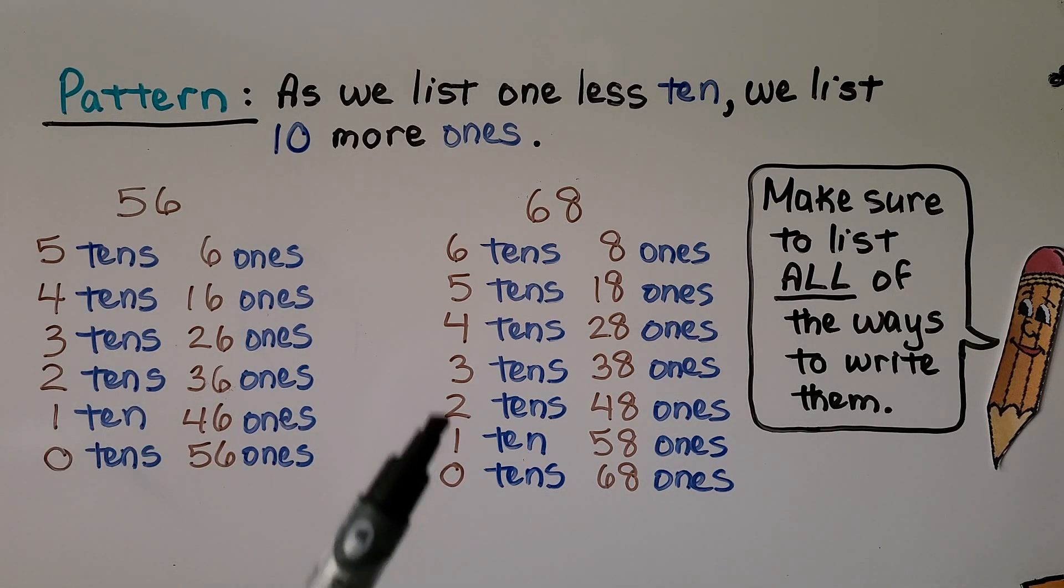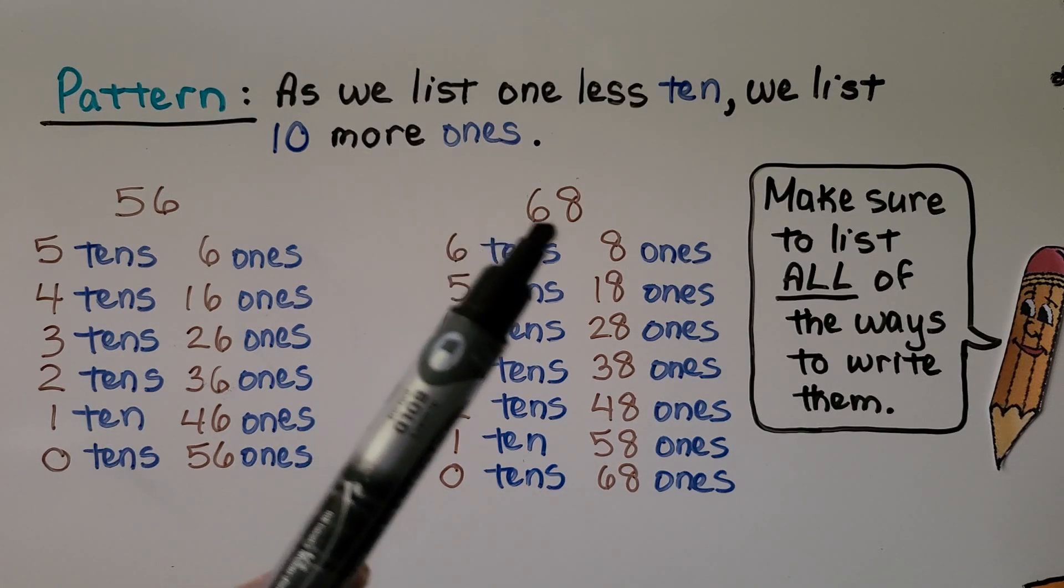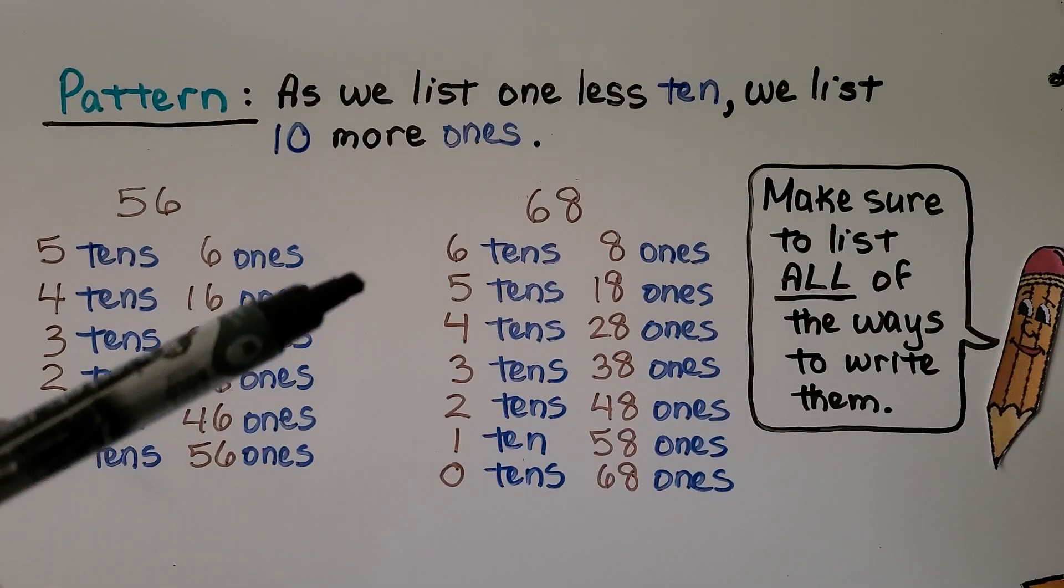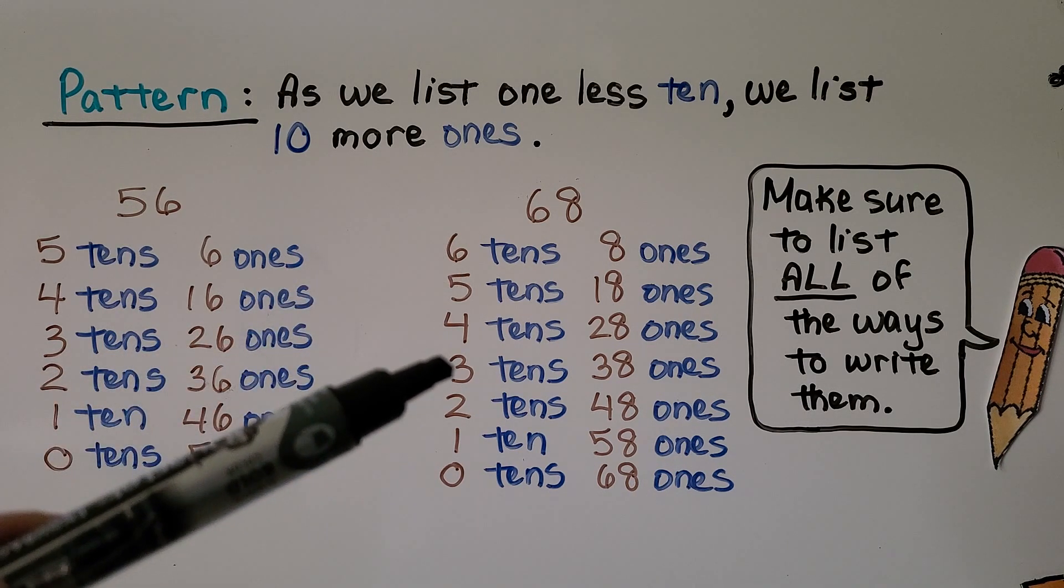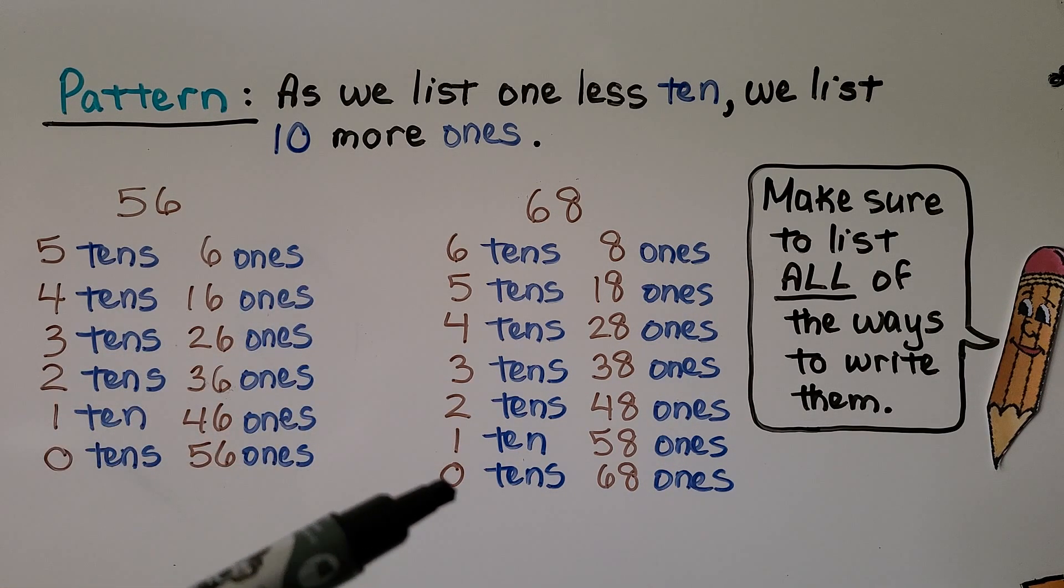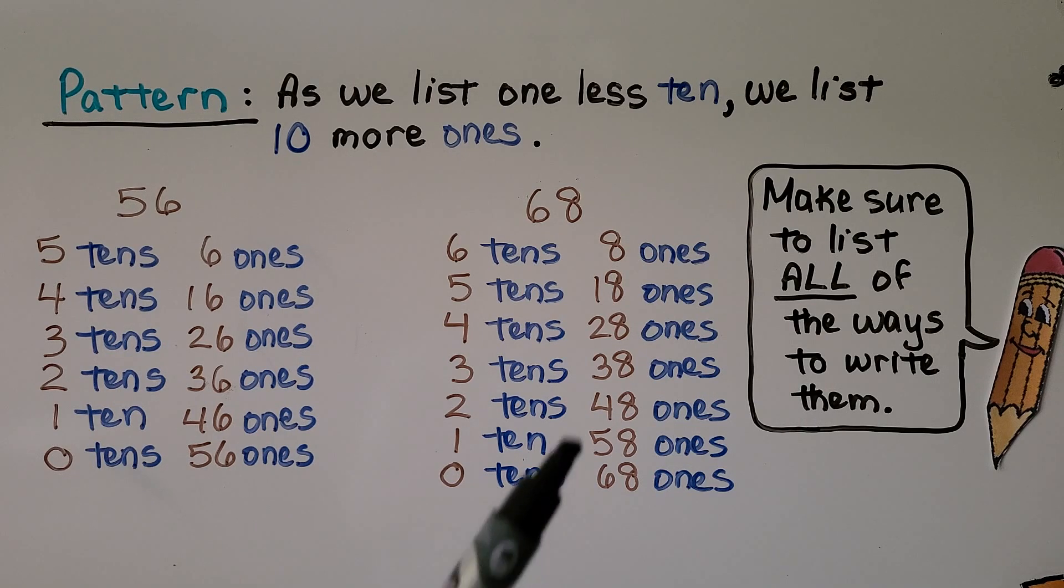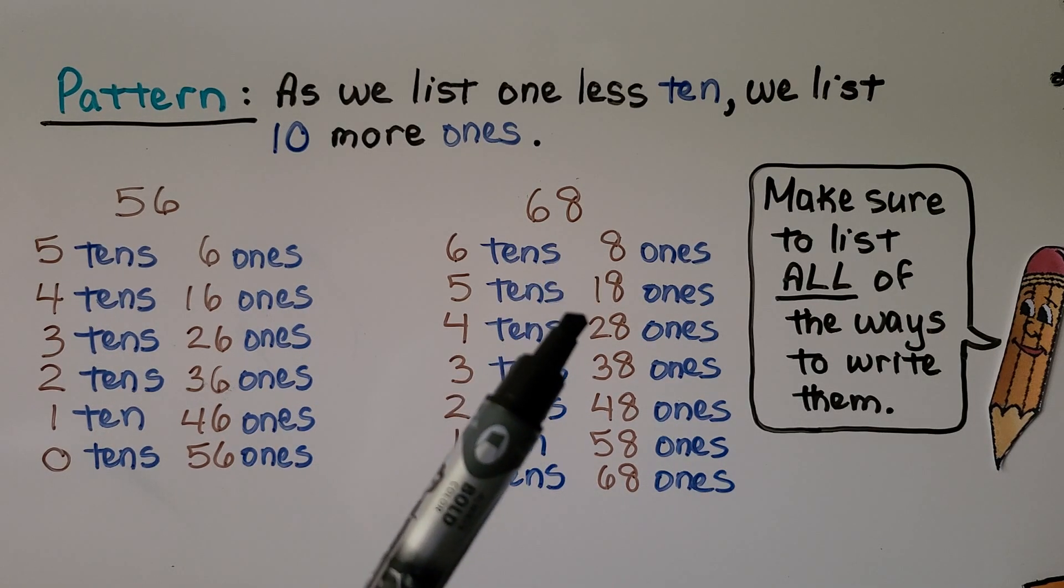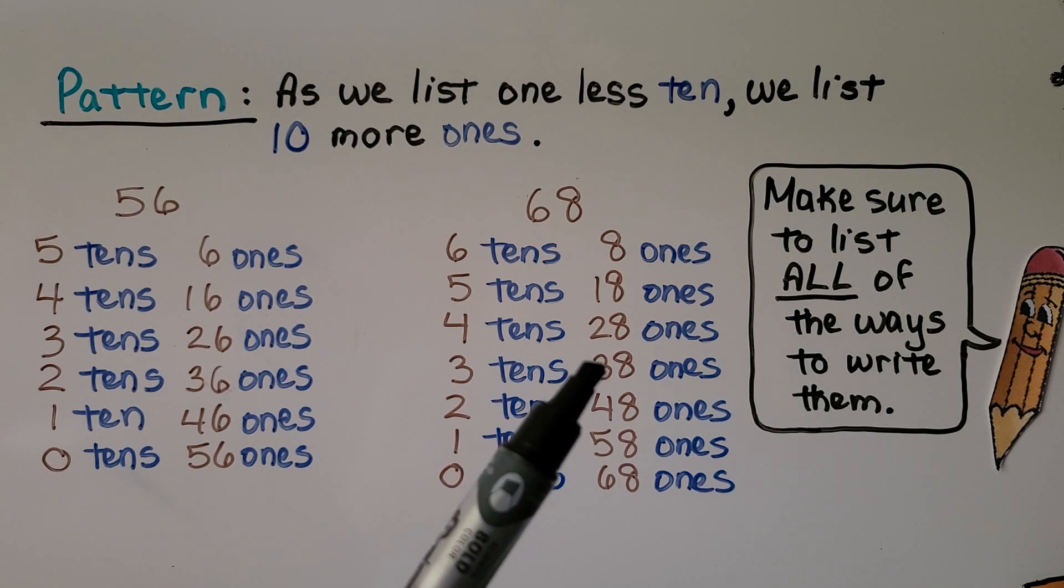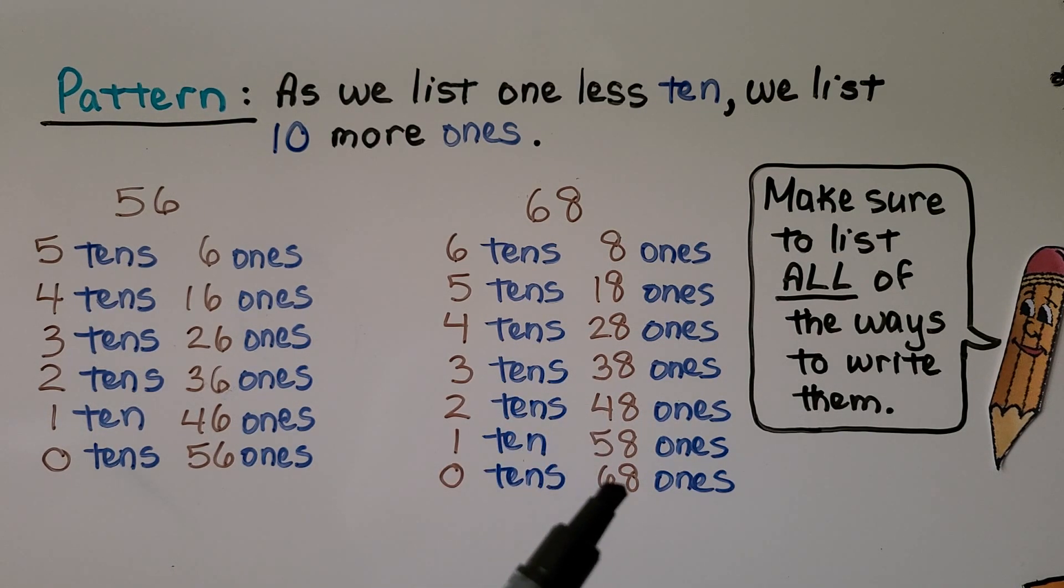For 68, it has 6 tens and 8 ones. We're going to go 6 tens, then 5, then 4, 3, 2, 1, all the way to 0 when we have no more tens to trade. And the ones place is getting 10 more ones. 8, then 18, 28, 38, 48, 58, 68.